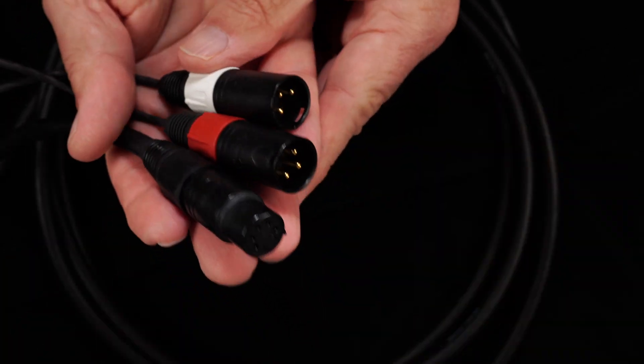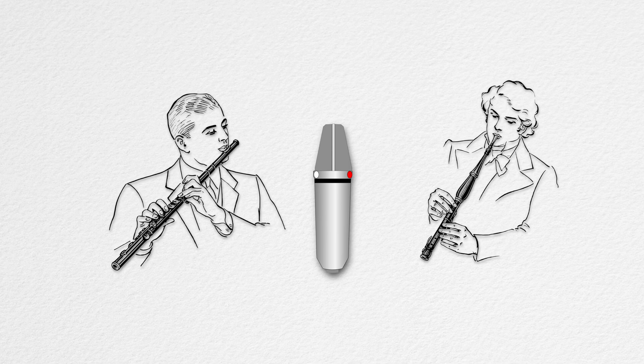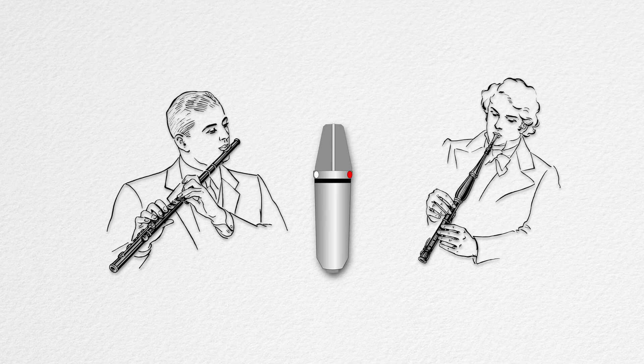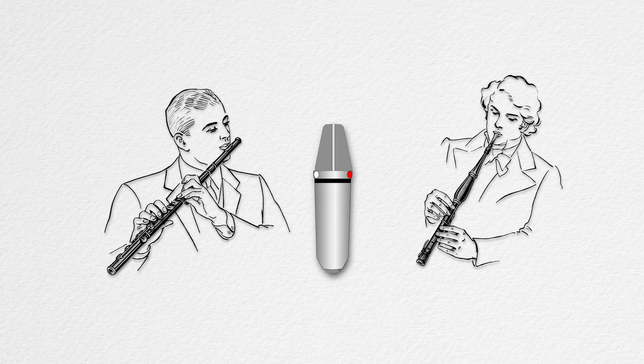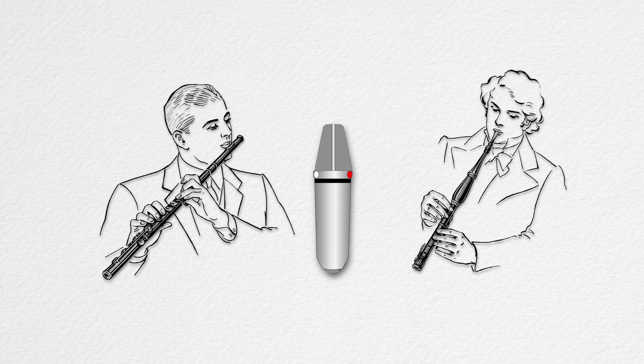This lets you do some interesting things after you record, which is what this video is all about. The simplest use is to have a vocalist or instrument on either side of the microphone. But the real magic comes in when you combine the two sides in different ways to change the microphone pattern in post.